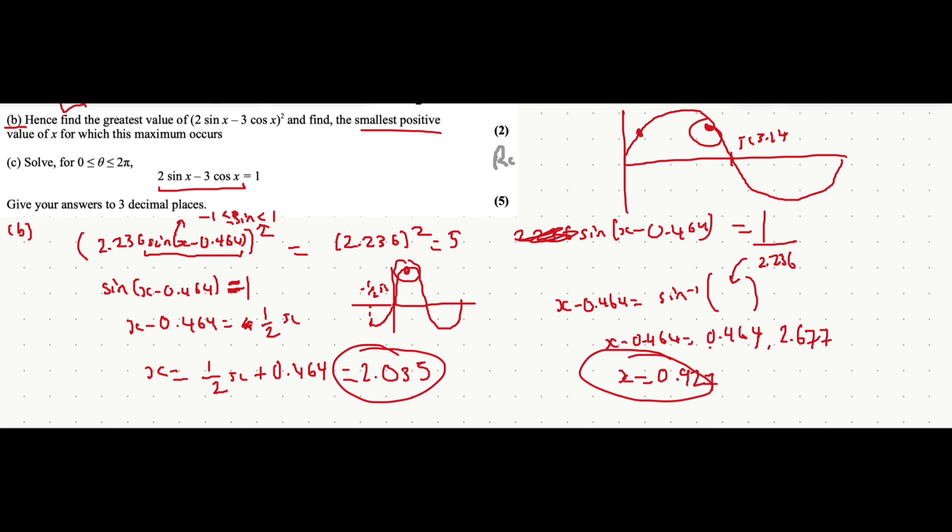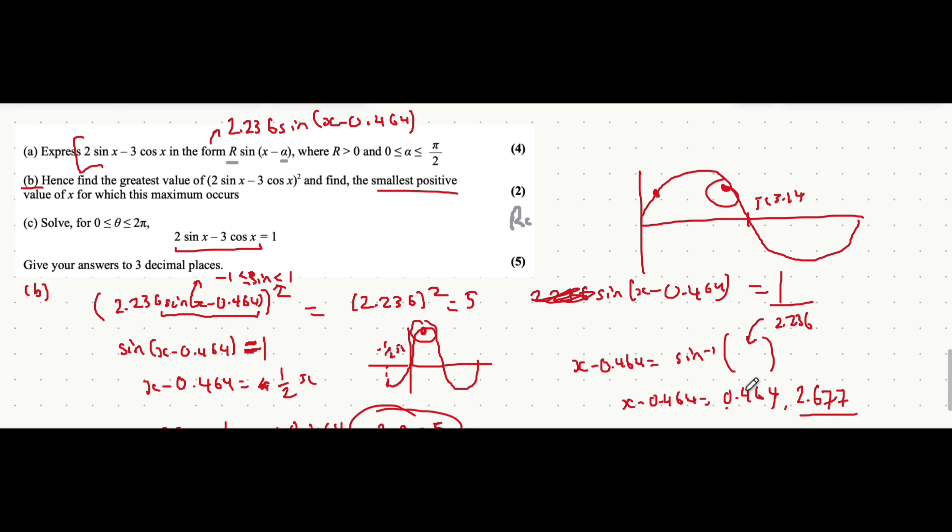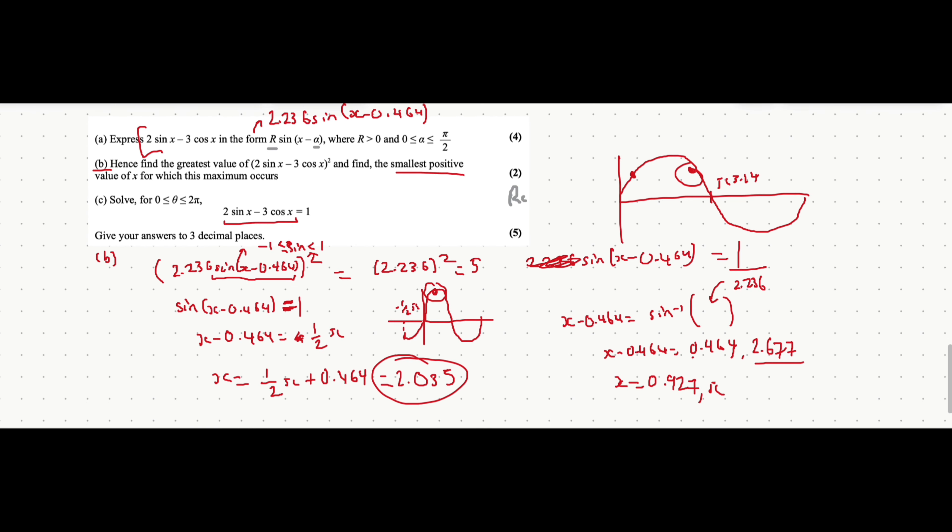And to get the other value of x... I'm just going to erase this because this suggests that there's only one answer for x. But we just found that there's two. To get the other value of x, again, you just add 0.464. But this time to the second solution. So add 0.464. And that will get you a value of pi radians. That's everything for this question. Hopefully it made sense. And if you do have any questions, just let me know in the comments. Otherwise, be sure to like the video if it helped and subscribe. I'd appreciate it a lot.